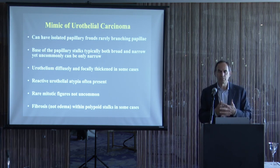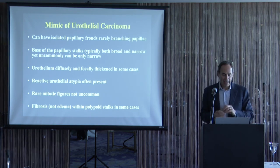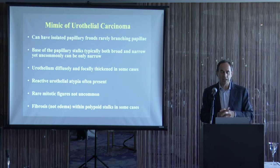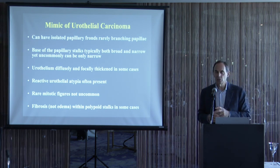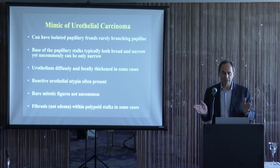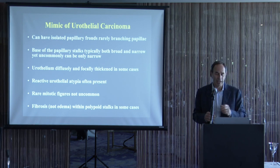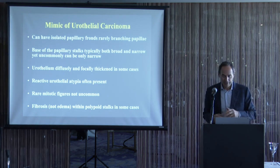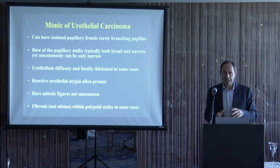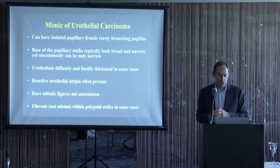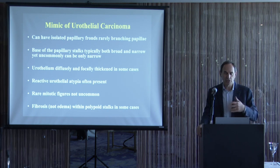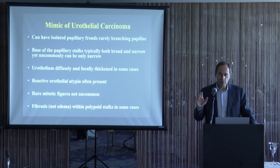Polypoid cystitis mimics urothelial cancer because it can have isolated papillary fronds that look neoplastic, occasionally branching fronds, and sometimes thin-based structures. Thickened urothelium is often associated with neoplasms but can occur in polypoid cystitis. Reactive urothelial changes and mitotic figures may be present, since this is a reaction to injury. Classic broad-based, edematous bullous cystitis with scattered inflammatory cells is not diagnostically problematic.